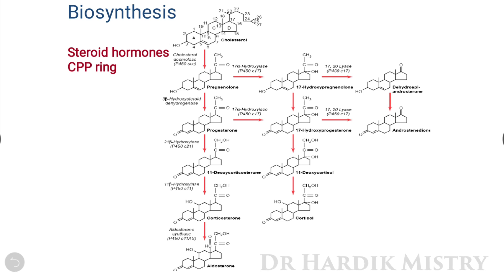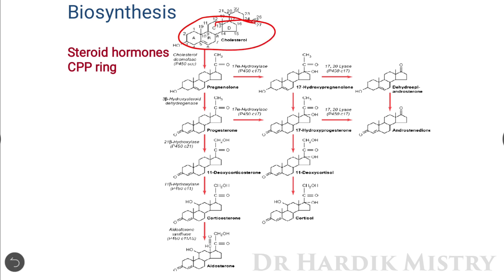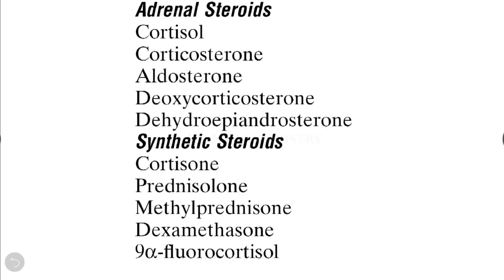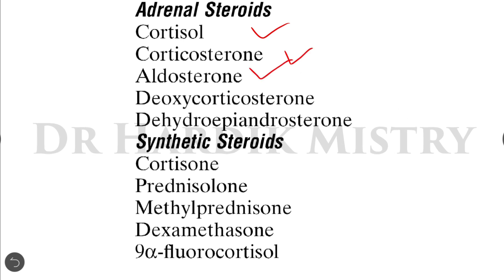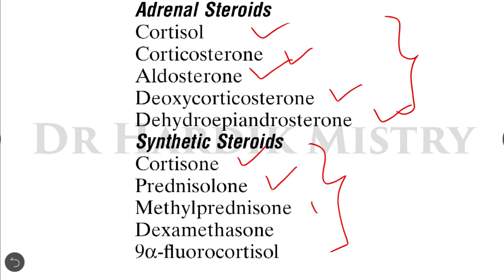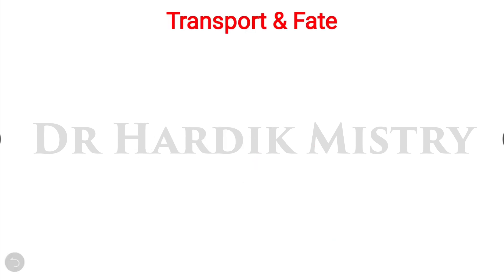All these hormones are steroid hormones, basically synthesized from cholesterol. The natural steroids include cortisol, corticosterone, aldosterone, deoxycorticosterone, and dehydroepiandrosterone. The synthetic steroids include cortisone, prednisolone, methylprednisolone, dexamethasone, and 9-alpha-fluorocortisol.